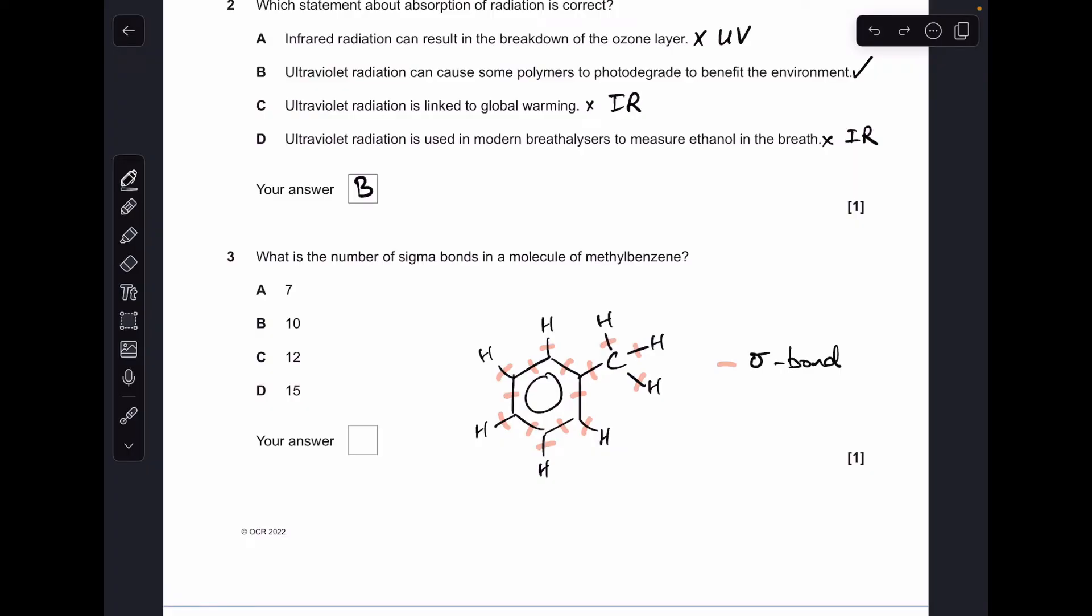Moving on to three. I've drawn up the methyl benzene molecule and highlighted all the sigma bonds. And when you count them up, there's 15 of them. So D was the answer.